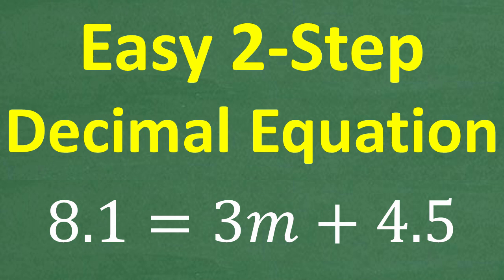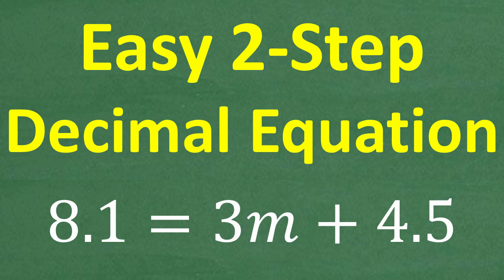8.1 is equal to 3m plus 4.5, and what we want to do here is to solve for the variable m. What is m equal to? Obviously we have some decimals, so feel free to use your calculator. If you can figure this out, go ahead and put your answer into the comment section.